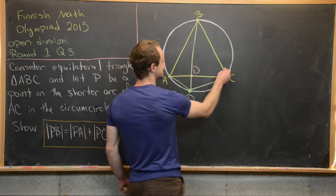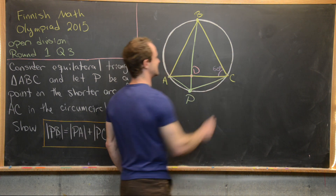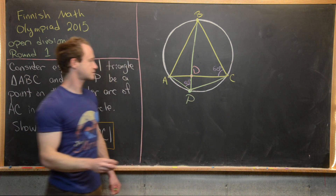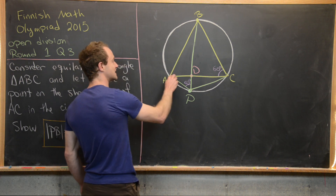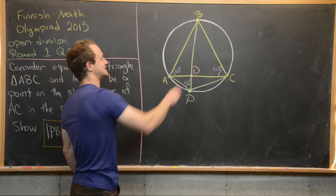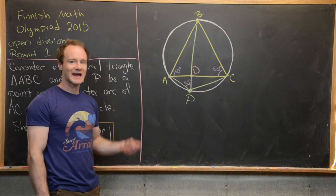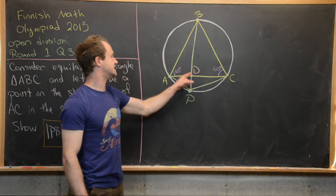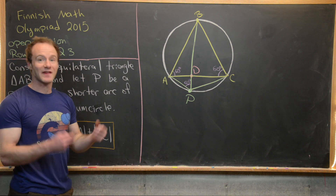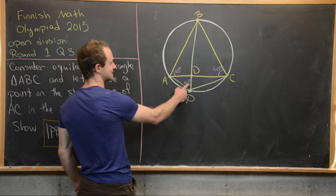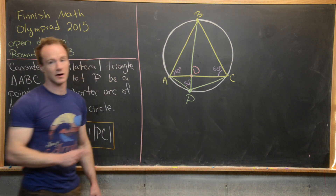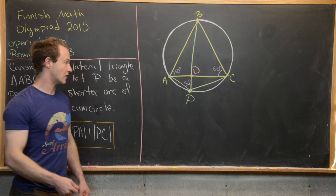Since this is an equilateral triangle, angle ACB is 60 degrees, which tells us angle APB is also 60 degrees. Again, since this is an equilateral triangle, angle BAC is also 60 degrees. Triangle ABD and triangle ABP are similar by the angle-angle-angle theorem — they both share the 60-degree angle and share the angle at B, making their third angles congruent as well.